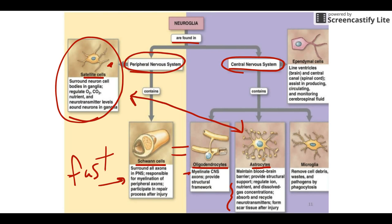The ependymal cells are essentially the epithelial cells of the nervous system — they make linings. They line ventricles and the cerebrospinal fluid spaces. The microglia are essentially like white blood cells; they get rid of waste and cell debris by phagocytosis, swallowing up bacteria, viruses, dead cells, or anything damaged. Those are your six types of neuroglia. A helpful memory tip: the two that start with S — satellite and Schwann — are your peripheral nervous system cells. Keep those straight and everything else tends to work out.